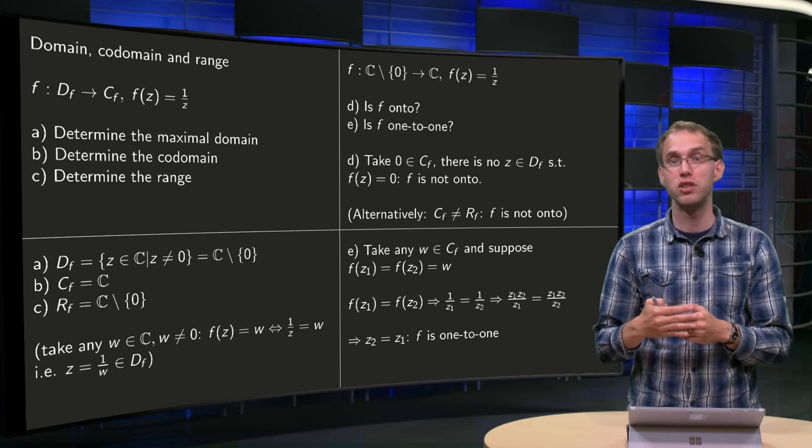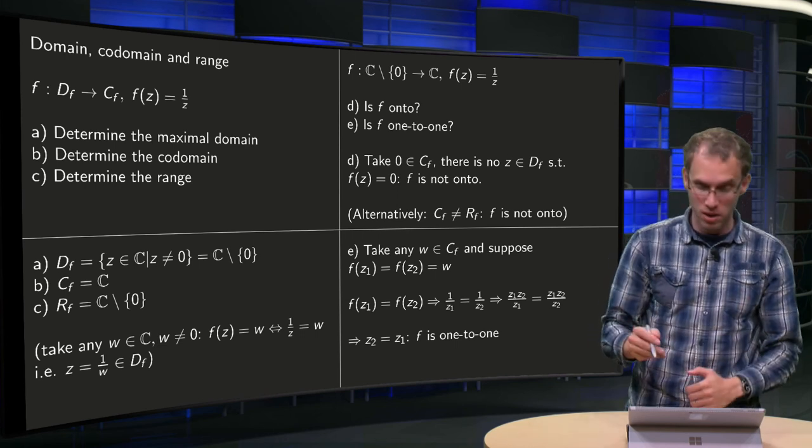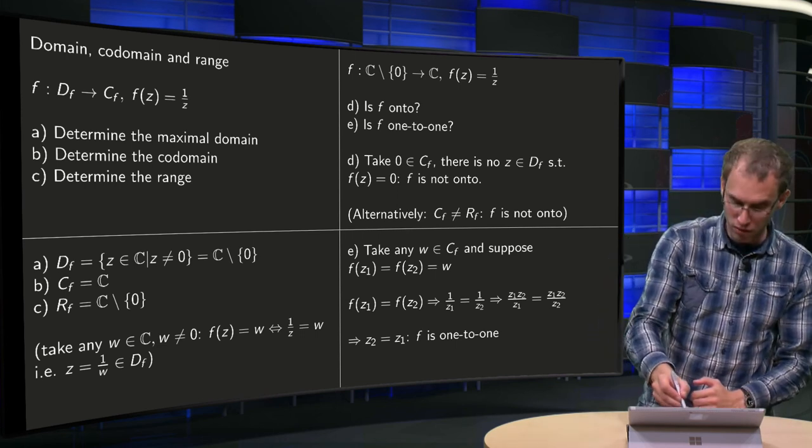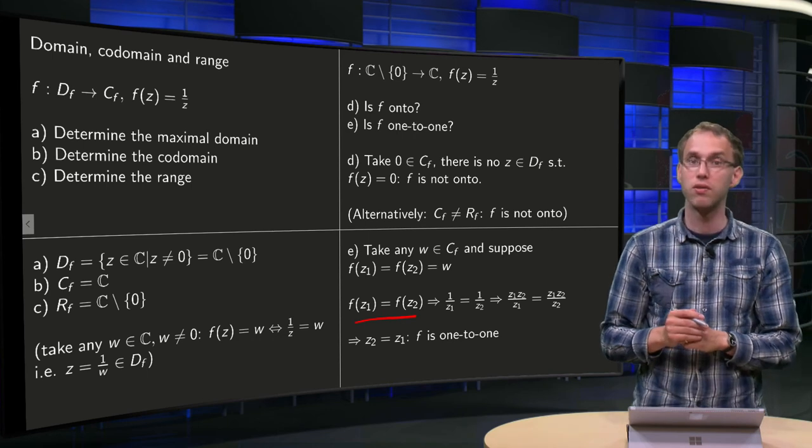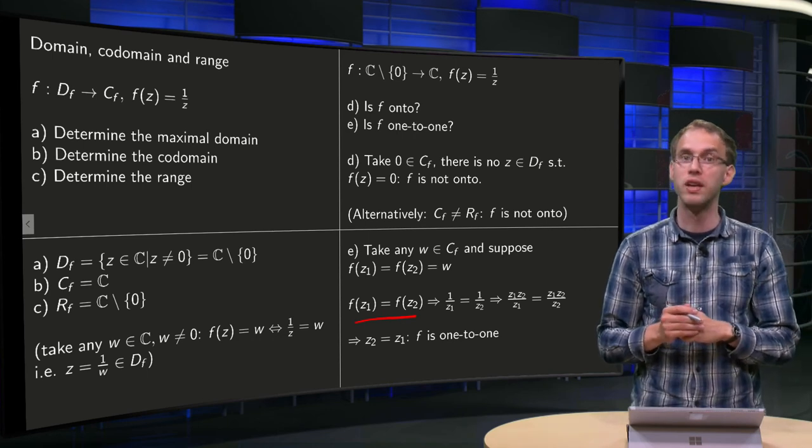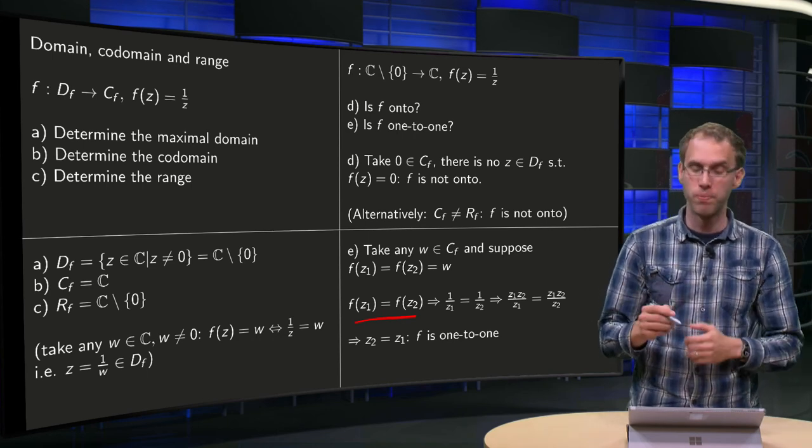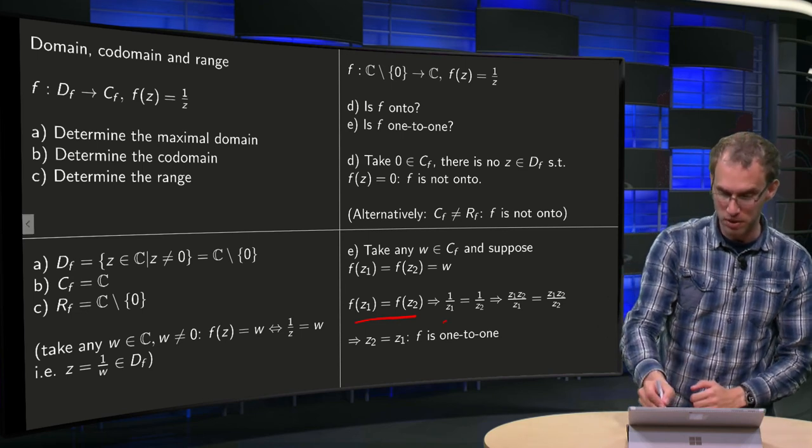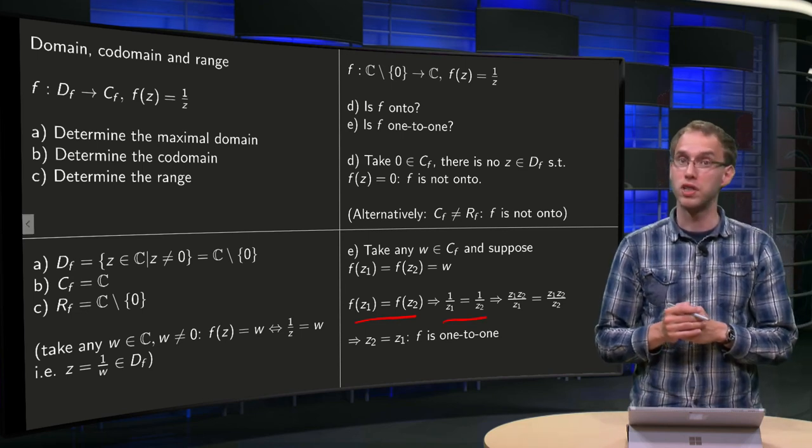So how do you show that the function is one-to-one? Well, you try to choose two z1 and z2 such that f(z1) equals f(z2), and see where that leads you. Well, if the function values are the same, that means that 1 over z1 equals 1 over z2.